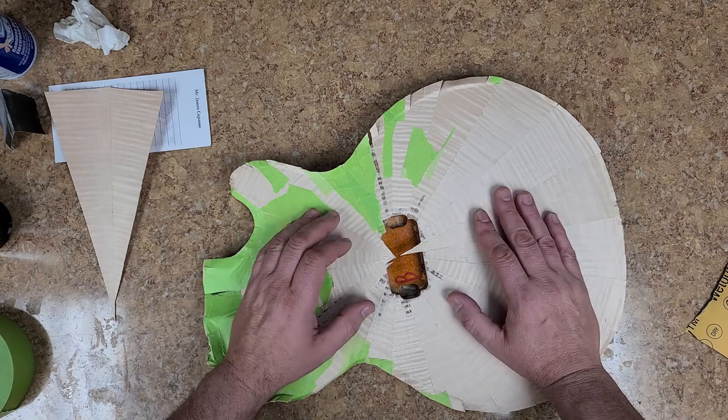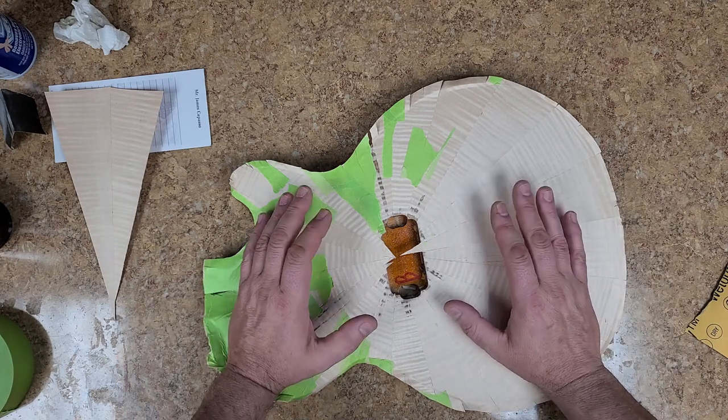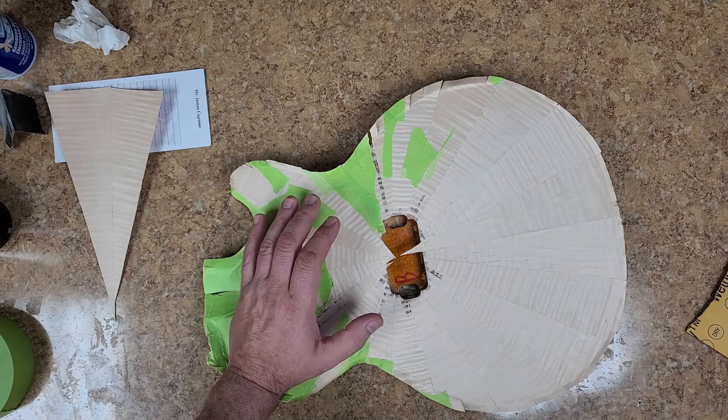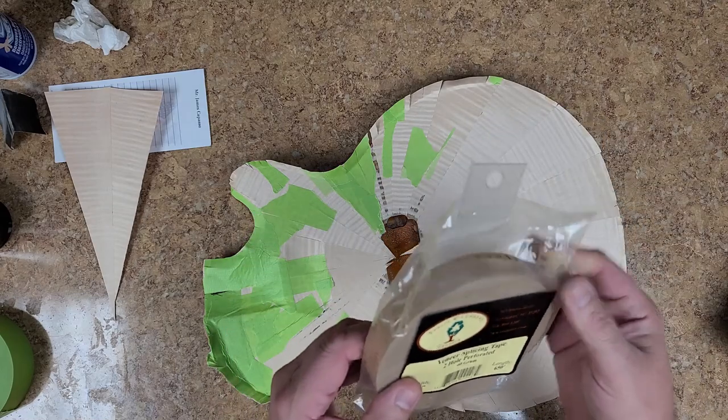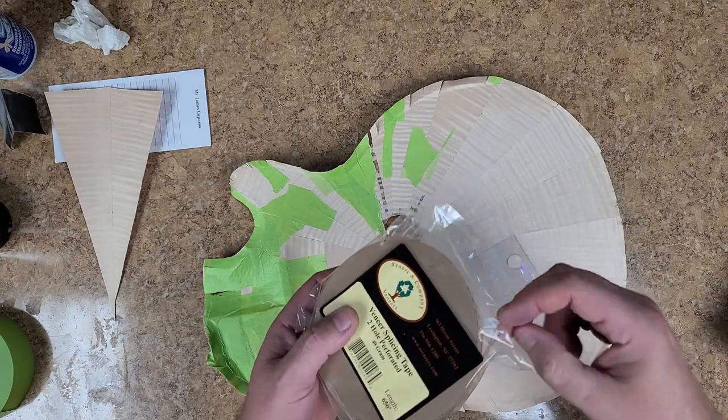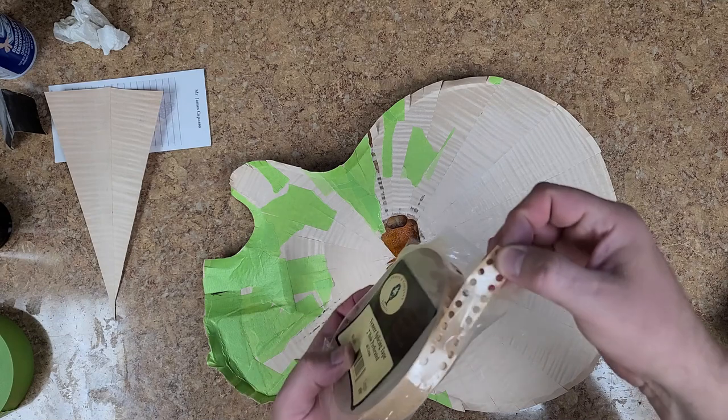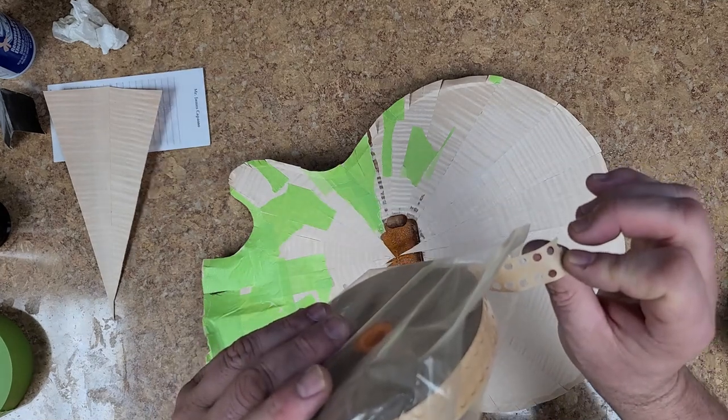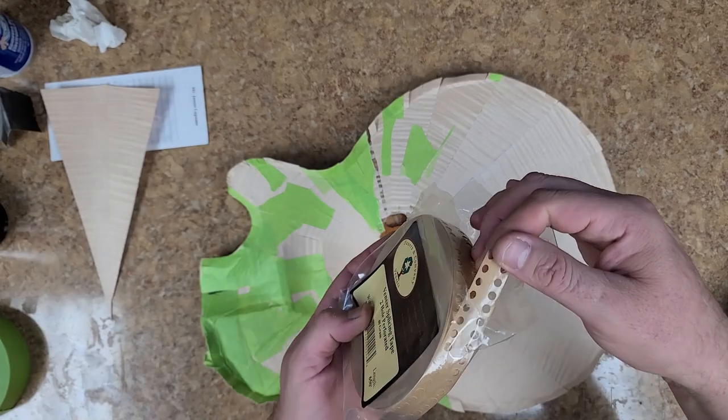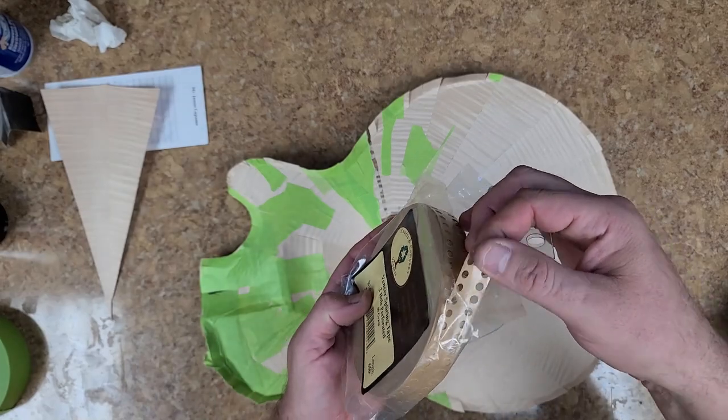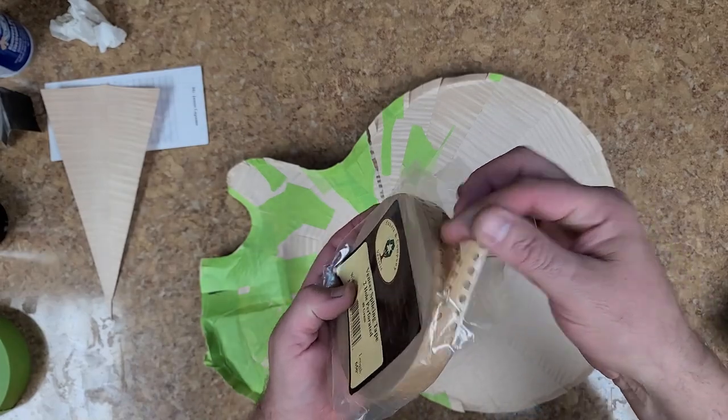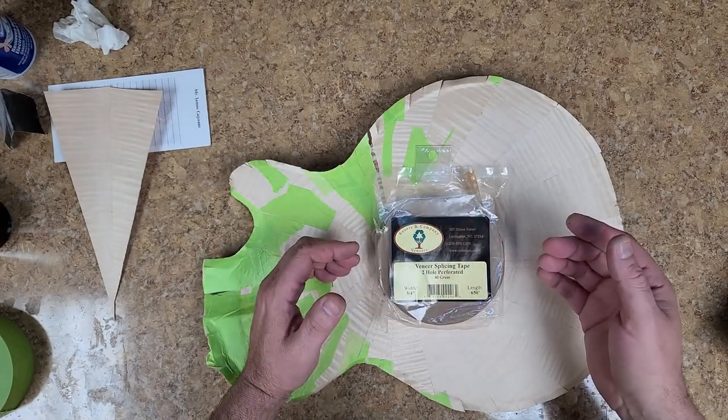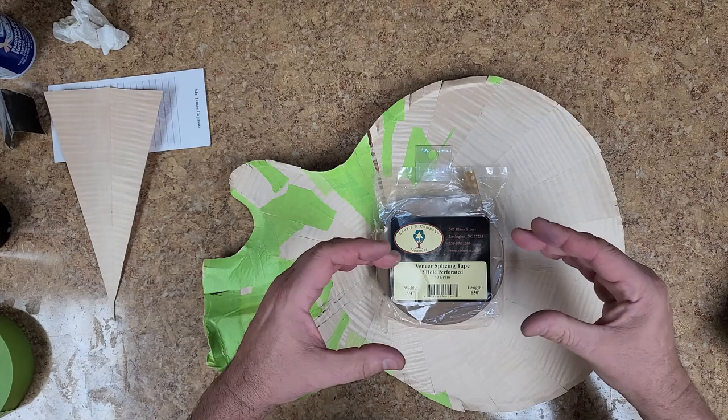So, what I ended up doing is I picked up a three-hole veneer tape. Now, this is a two-hole veneer tape. And what it is, is basically has holes on one side of it. This is the side that is paper. And this is the side that has the glue on it. You kind of see, it's a little shinier.